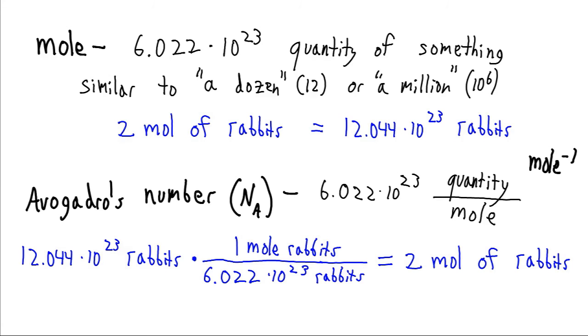So to see why we need this number, let's say that we wanted to go the reverse of our process here. Here, we took two moles. So we took twice this quantity to figure out our number of rabbits. Now what if we wanted to get back the other direction? So we're starting out with 12.044 times 10 to the 23 rabbits. Well, now what I'm going to do, since I want to get into moles, I'm going to use this ratio, but I'm going to flip it so moles is on top.